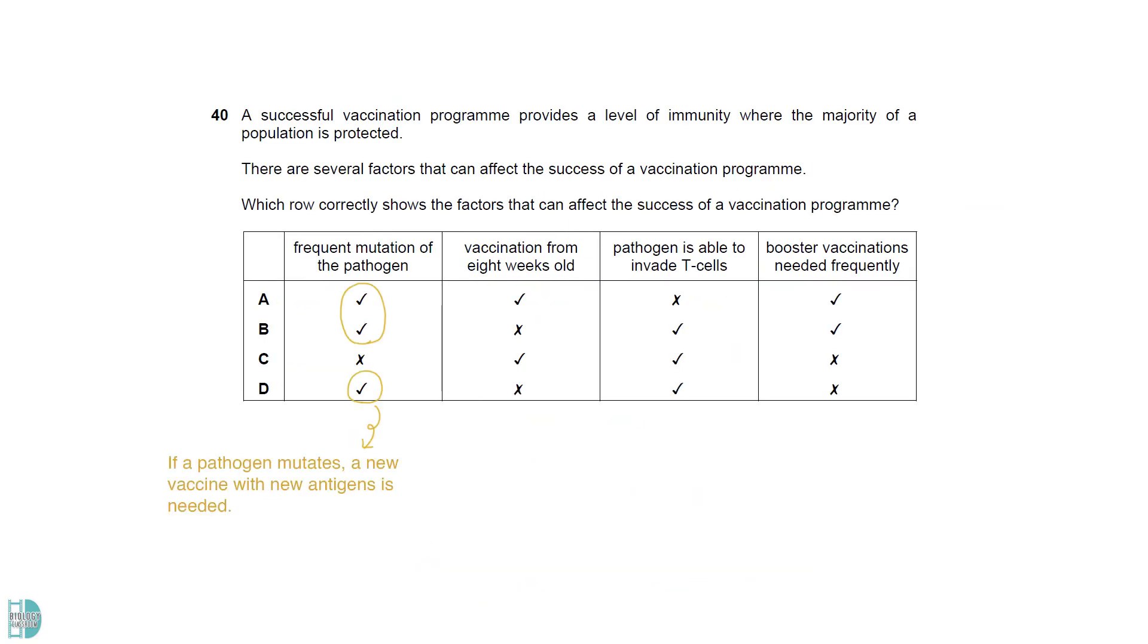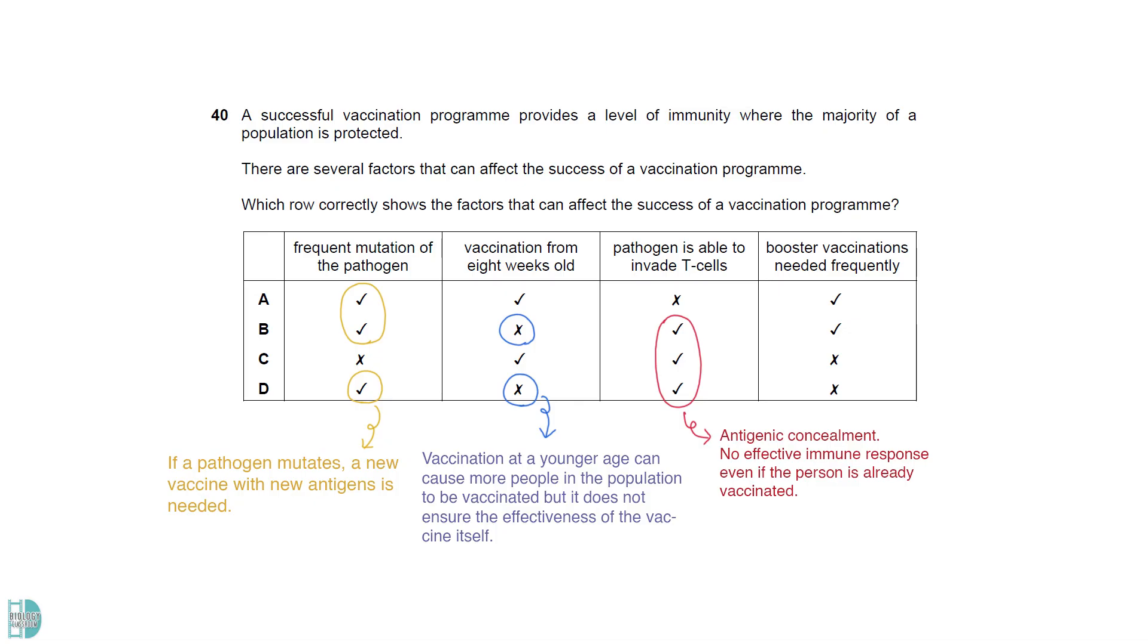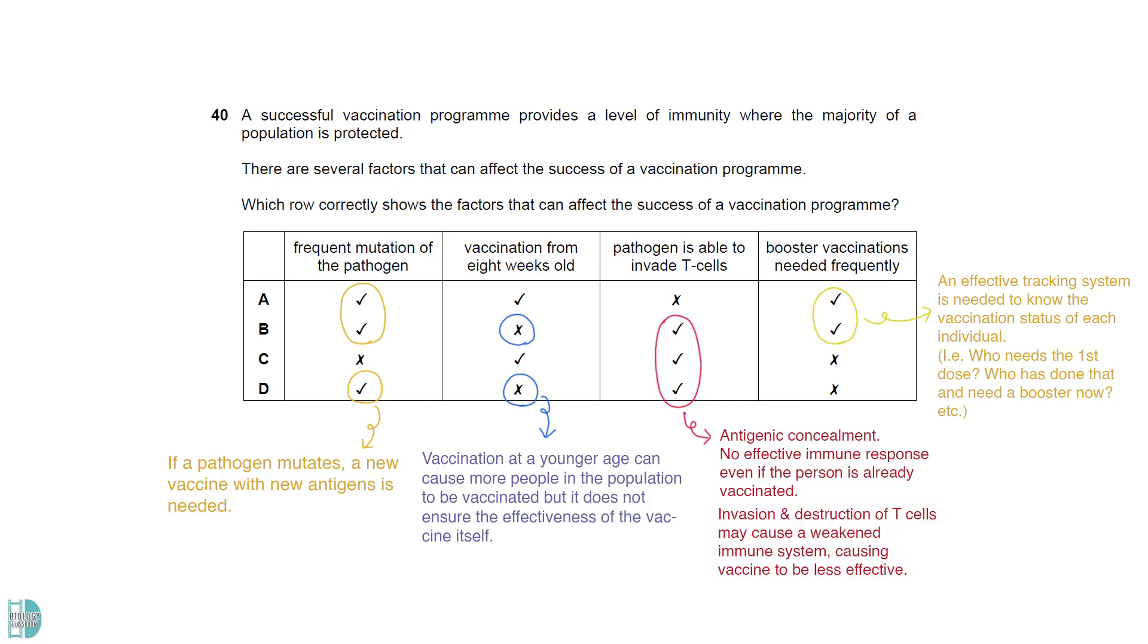If a pathogen mutates, we need to prepare a new vaccine that contains the new antigen. So, the more frequently it mutates, the lower the success rate of a vaccination program. Even though vaccination at a younger age can cause more people in a population to be vaccinated, this does not ensure the effectiveness of the vaccine itself. So, this cannot determine the success of the vaccination program. If a pathogen invades T-cell, it can hide from the antibodies. This is known as antigenic concealment. Even if the person has already received the vaccine, our immune system cannot effectively destroy the pathogen which hides inside our body cells. Besides, if T-cells are destroyed, the immune system becomes weaker, leading to a poor response to vaccine. If booster doses are needed, a tracking system is required to know the vaccination progress of everyone. It is very hard to keep track of the vaccination status of people in a large population. This will hinder the success of a vaccination program.